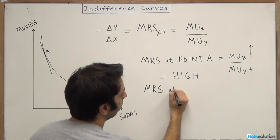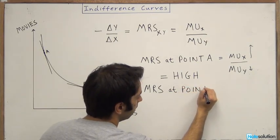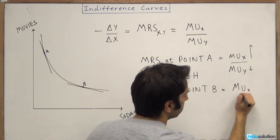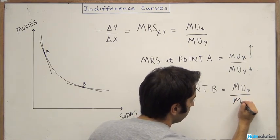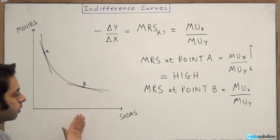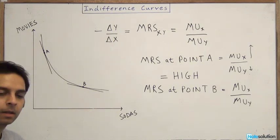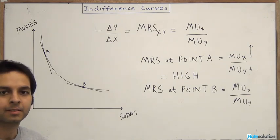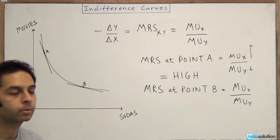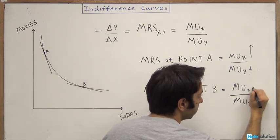So the MRS, coming back, the MRS at point B is once again MUx over MUy. So this time, at point B, you already have a lot of sodas but very little movies. And so if you were to consume even more sodas, or you were to get an extra soda, that would, according to the law of diminishing marginal returns, be of very little value to you, or your marginal utility from consuming, or the satisfaction you derive from consuming, that extra soda would be very small. And so this number would be a small increment.